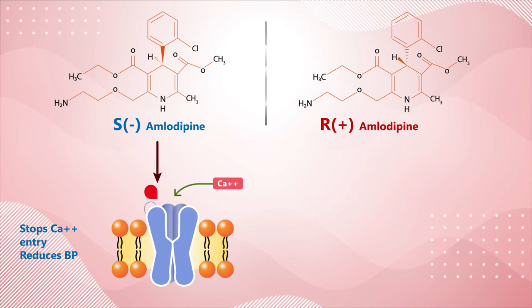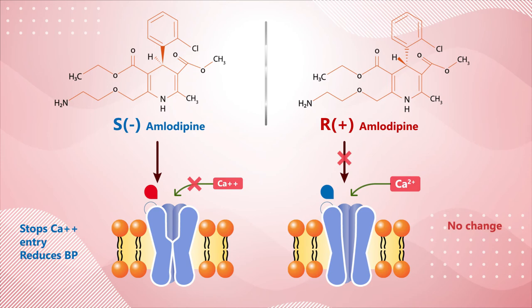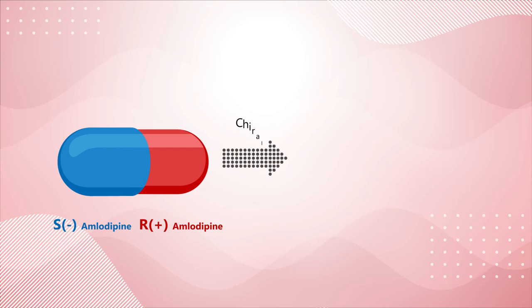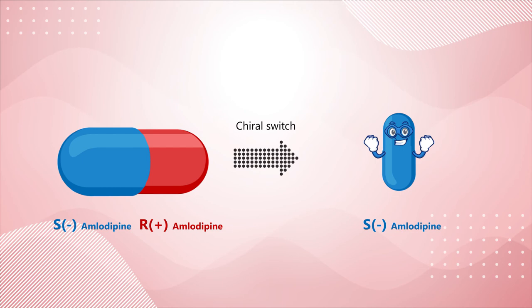It turns out amlodipine is a chiral compound. The S-enantiomer is responsible for the blocking of the L-type calcium channel, and the R-enantiomer has very little activity. Formulating a chirally pure compound using S-amlodipine reduces the pill size by half, thereby doubling the potency with no loss in efficacy.